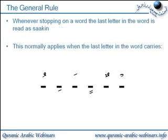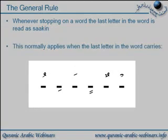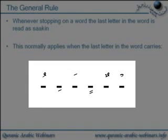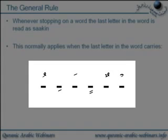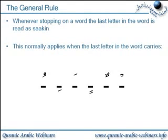The overall general rule is: whenever stopping on a word, the last letter in the word is read as sakin. This normally applies when the last letter carries a sukoon, fatha, kasra, dhamma, dhammatain, or kasratain. If the last letter already has a sukoon, it remains sakin. Otherwise, all those last letters when stopping are effectively read as if they have a sukoon on them.